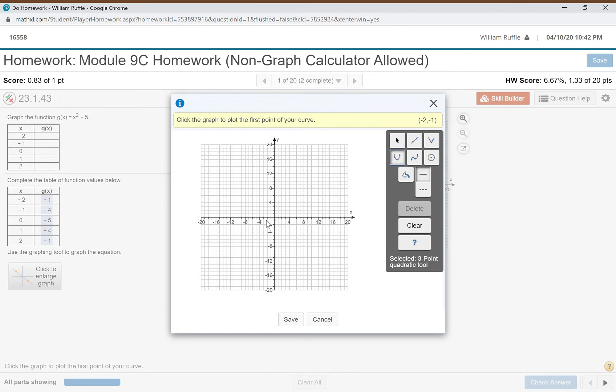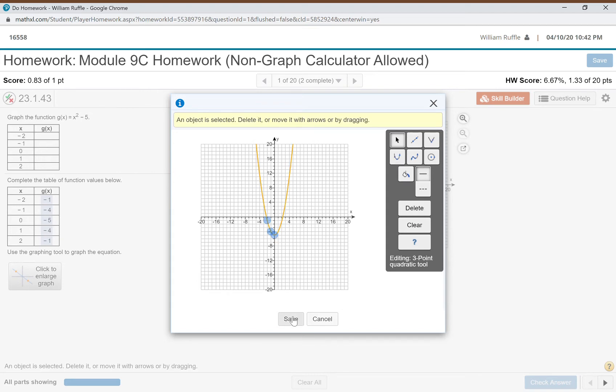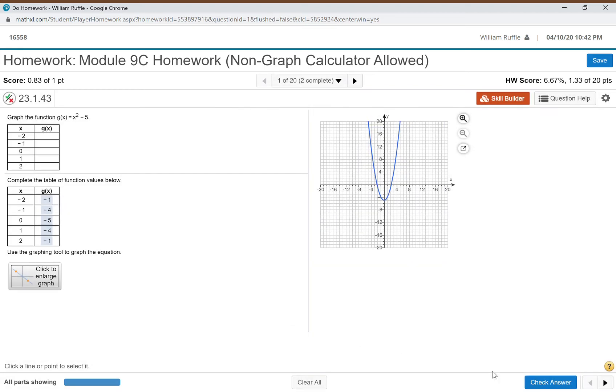Negative two, negative one—there's negative two, negative one. I'll just do the first three: negative one, negative four, and then I'm going to do zero, negative five. You see instantly it draws the parabola. I save, I check.